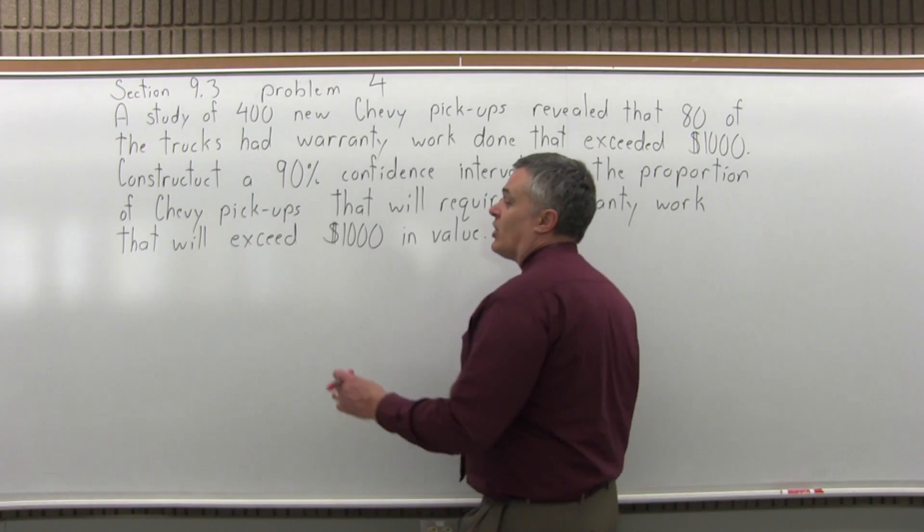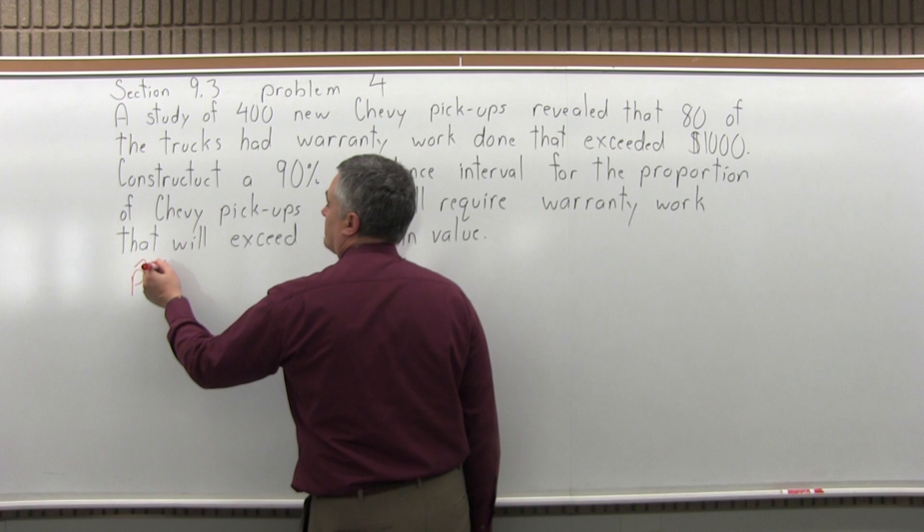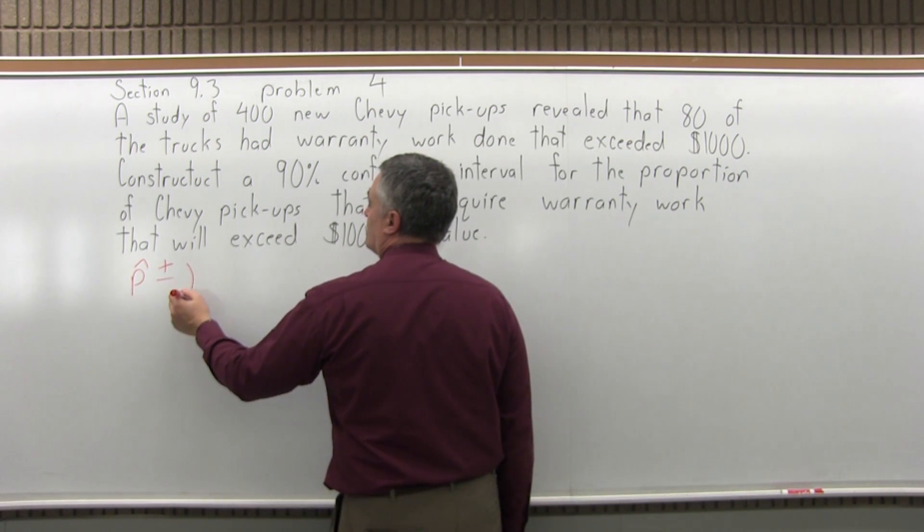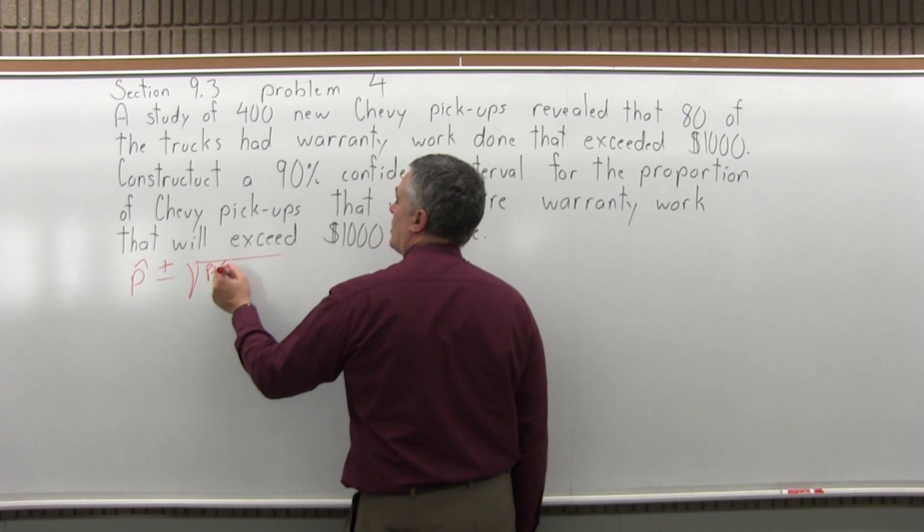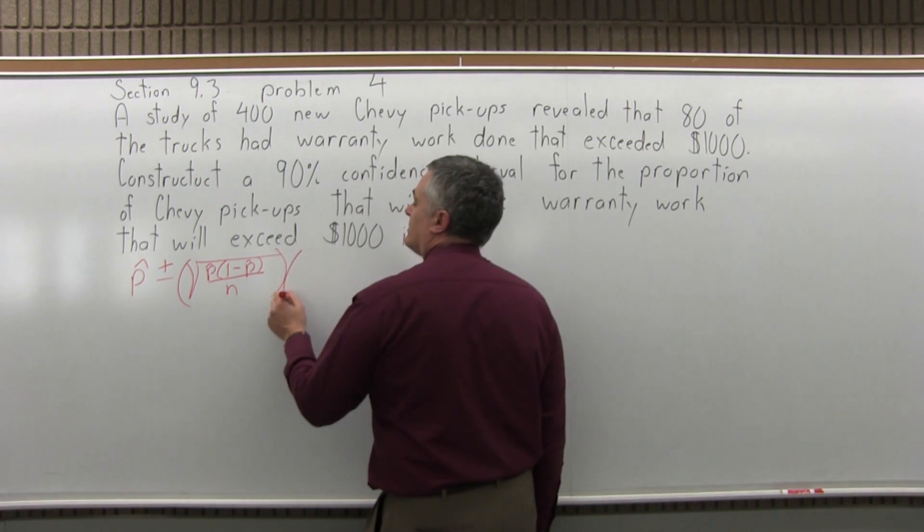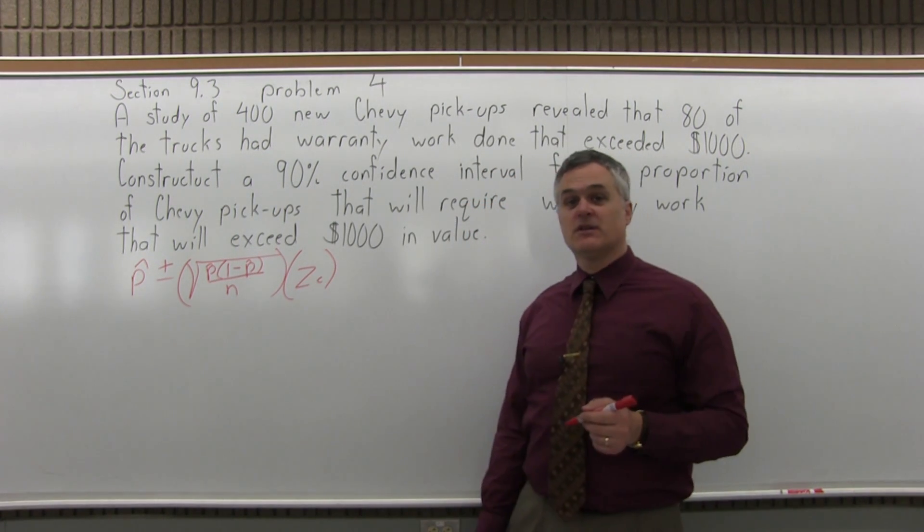So this is a confidence interval for a population proportion. So the formula for that type of confidence interval is p-hat plus or minus the square root of p-hat times 1 minus p-hat over n times z-sub-c. So that's the formula we're going to have to fill in and compute.